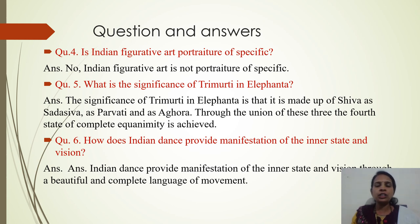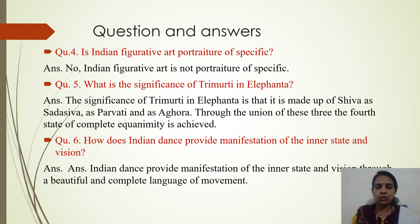Question number five: What is the significance of Tri-murti in Elephanta? Elephanta ki gufaon mein jo Shiv ki Tri-murti ka roop bana hai, uska kya mahatva hai? The significance of Tri-murti in Elephanta is that it is made up of Shiva as Sadashiva, as Parvati and as Aghora. Aghor matlab Bhagwan Shiv ka rudra roop. Through the union of these three, the fourth state of complete equanimity is achieved — Bhagwan Shiv ke in teen rupon ke sangam se, ek cautha roop jo ki samta ka bhaav pradarshit karta hai, sarvabhaomikta ka woh cautha roop, yeh teenon rupon se milkar banta hai.